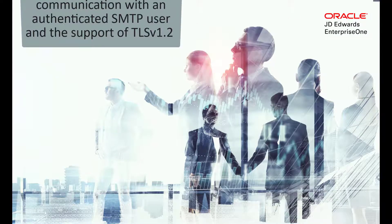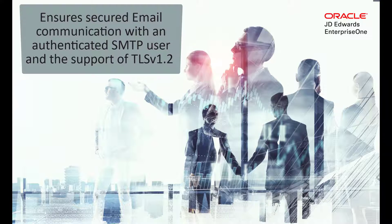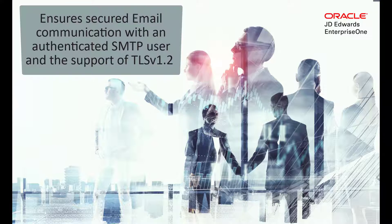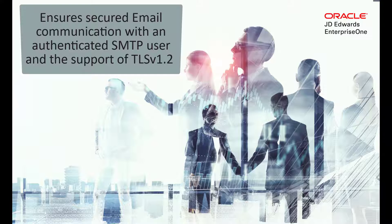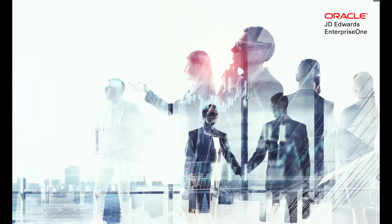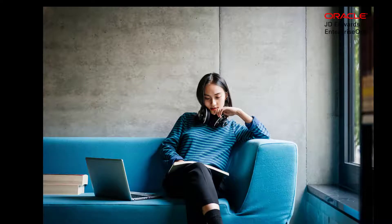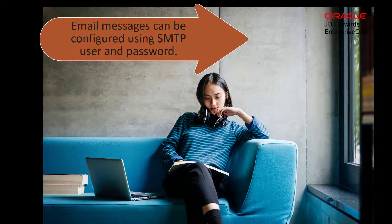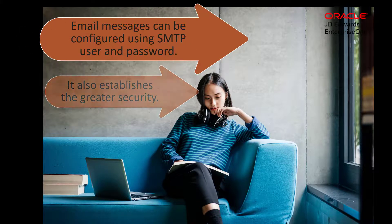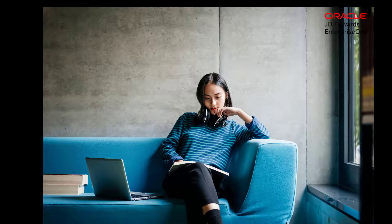With the enhanced email communication capabilities in Tools Release 23, you can now ensure secured email communication with an authenticated SMTP user and the support of TLS version 1.2 for mail notification. This feature allows administrators to define an SMTP user and password that will be utilized when JD Edwards EnterpriseOne messages are sent out as email communication. Providing these authentication details not only meets connection requirements that modern SMTP providers require, but also establishes greater security with a specific user ID and password for the account from which the messages will be sent out.